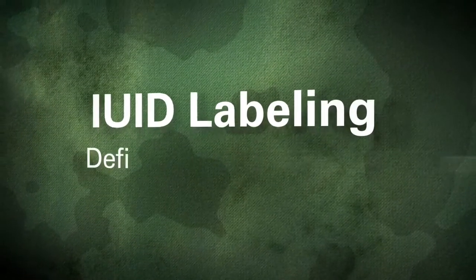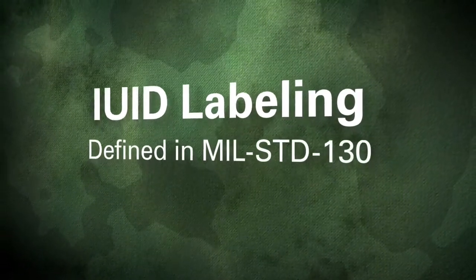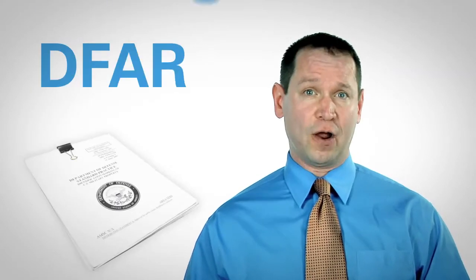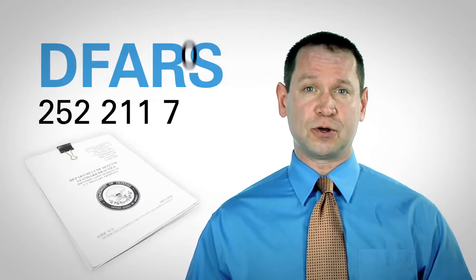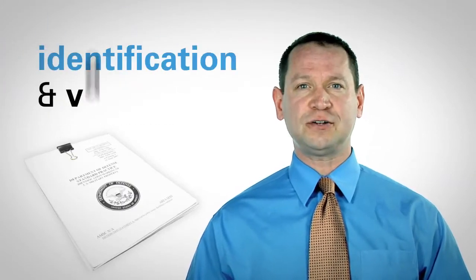Let's take a look at what's needed for IUID labeling, which is defined in Mill Standard 130. Your contract will probably have a reference to DFARS 252-211-7003. This clause covers identification and valuation.